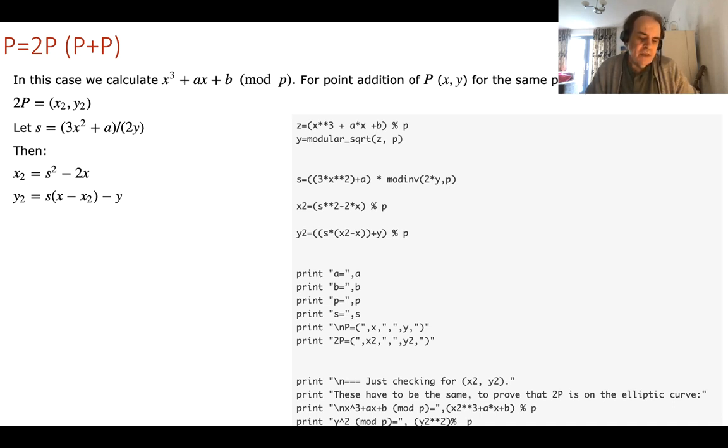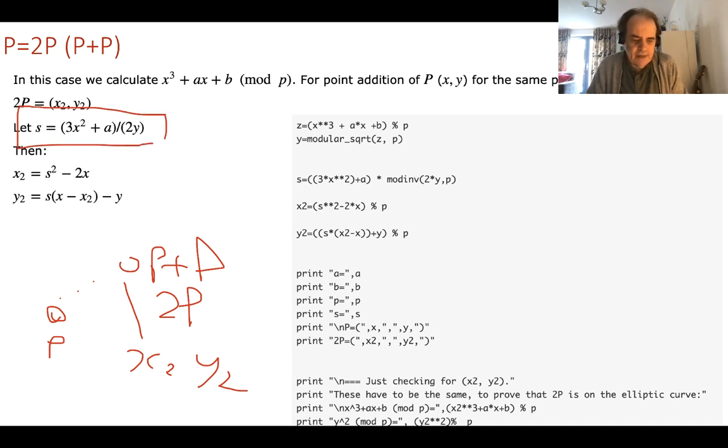So what we have is a point P, and what we want to do is to find P plus P, or 2P. And the way that we do this is that we have a simple calculation. So the calculation, if we're saying that this is x2, y2, then we first calculate an s value. In modular arithmetic, we take the inverse mod of 2y with respect to the prime number.